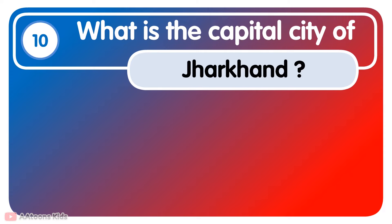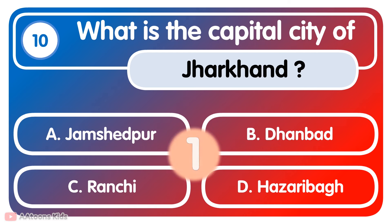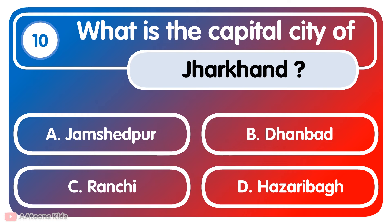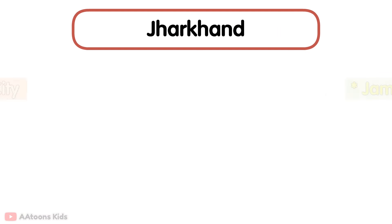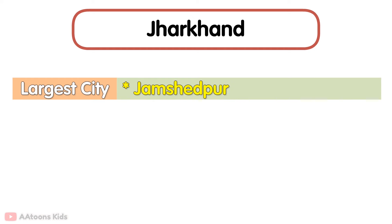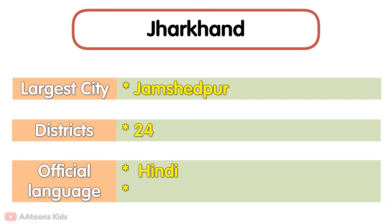What is the capital city of Jharkhand? Ranchi. Ranchi is the capital city of Jharkhand. The largest city in Jharkhand is Jamshedpur. It has a total of 24 districts. Its official language is Hindi. Jharkhand is famous for its mineral resources. Jamshedpur is the center for iron and steel production.